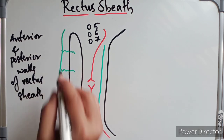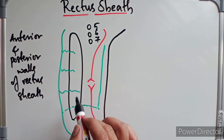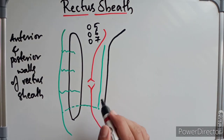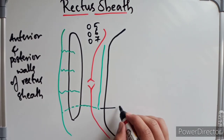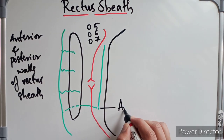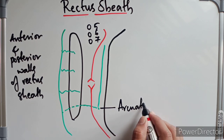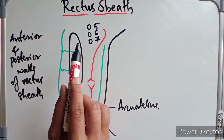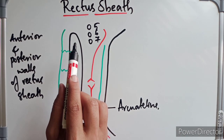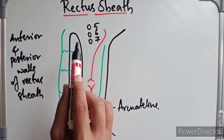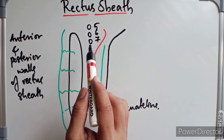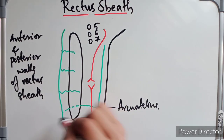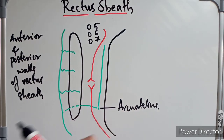The anterior wall has its tendinous insertions into the rectus abdominis muscle. The posterior wall is incomplete at the arcuate line. Above, it is attached to the 7th, 8th and 9th costal ribs, and lies directly on the 5th, 6th and 7th. Below, at the arcuate line, it is ending.